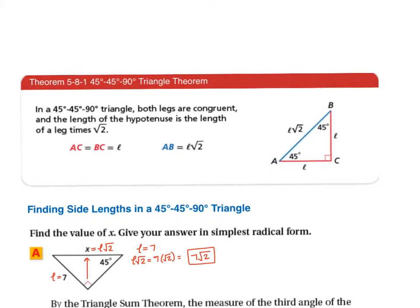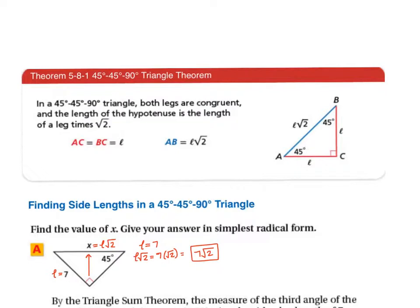A 45-45-90 triangle is isosceles because if two angles are the same, then the sides opposite them are the same. Two of the sides are going to match. The ratio — no matter what the side lengths are — follows L, L, and L√2. Opposite the 45° angles are the L sides, and opposite the right angle is L times √2.